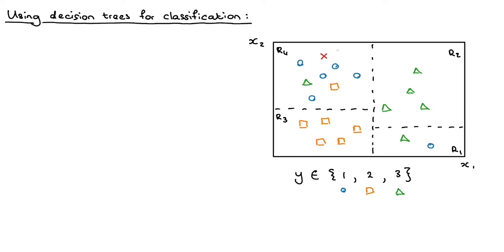So I think you can guess that the right thing to do is to assign that point as class 1, in other words a blue circle, because it lands in region 4. And in region 4, the class that occurs most often is this class, the blue circle.